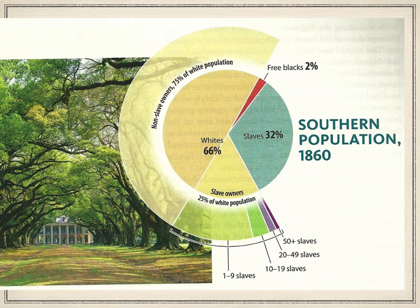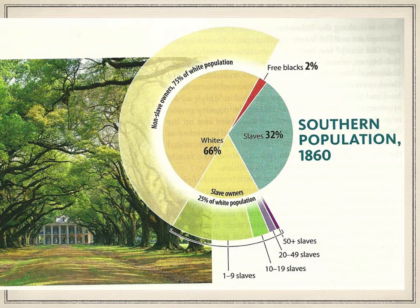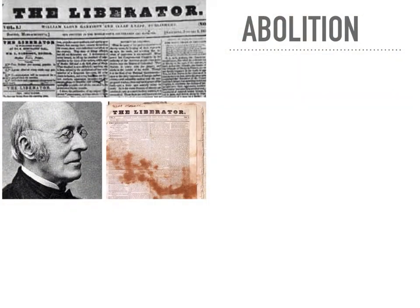Out of these reforms, people start to question the morality of slavery. There had always been people opposed to it — the Quakers, for example, had always been against slavery. But now, because of the religious push, the reform push, and the education push, more people are starting to say slavery is just wrong and it needs to stop. The abolition movement will be the result of this.